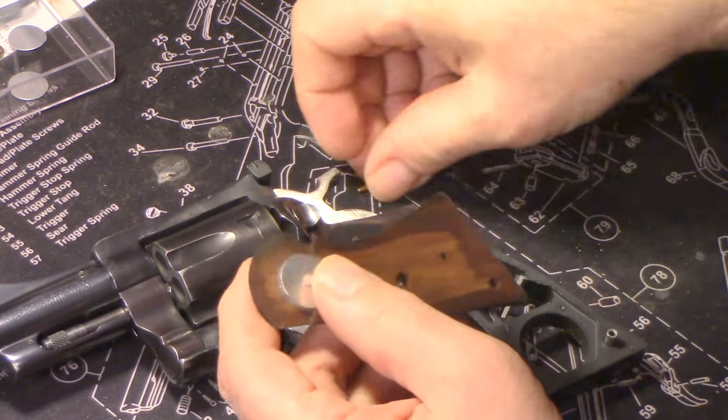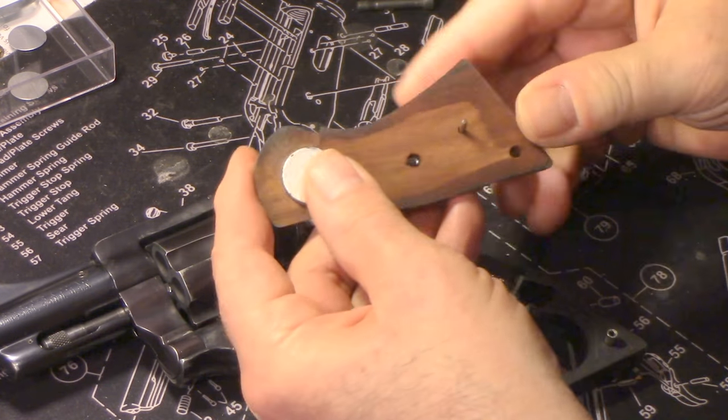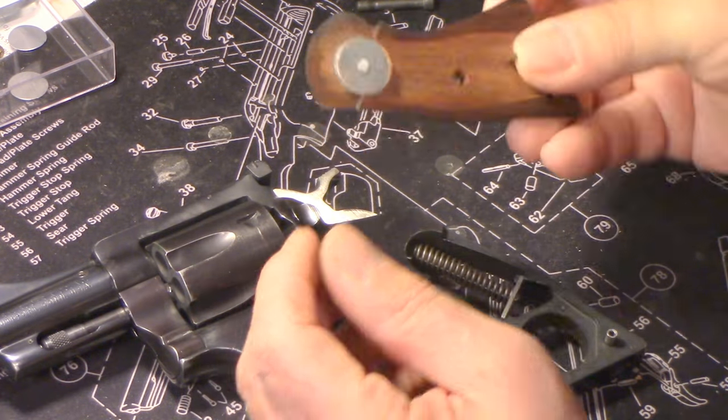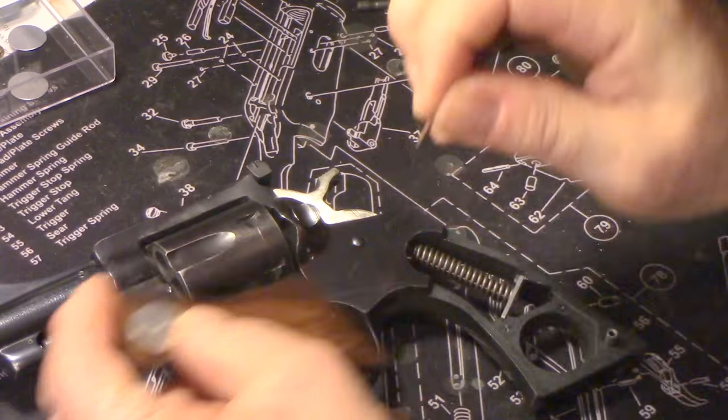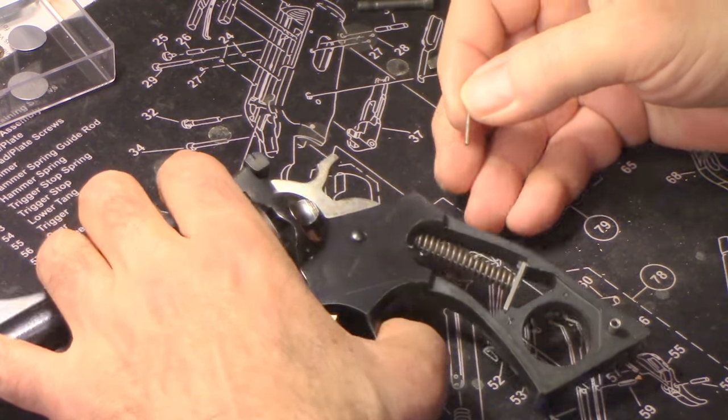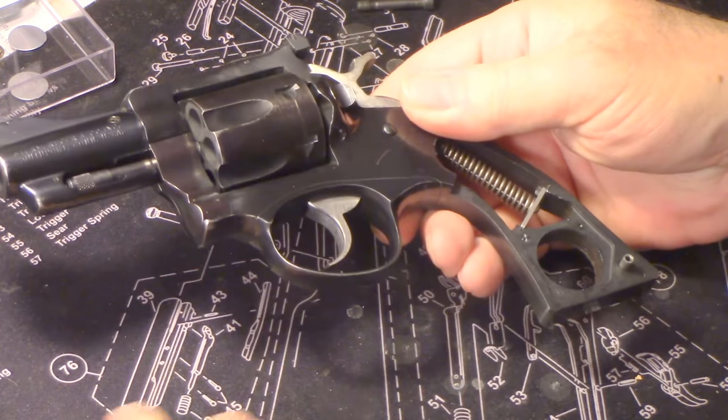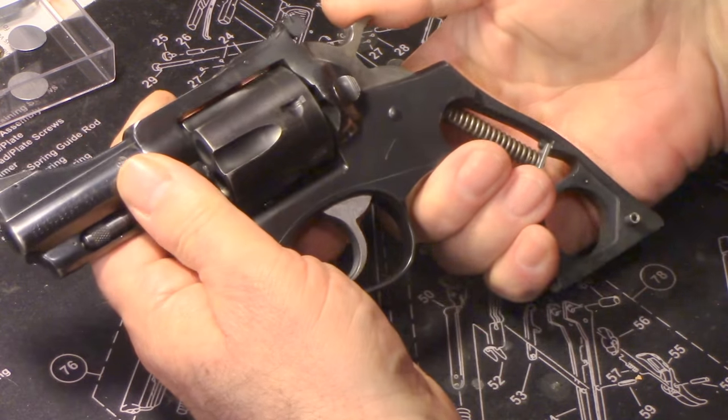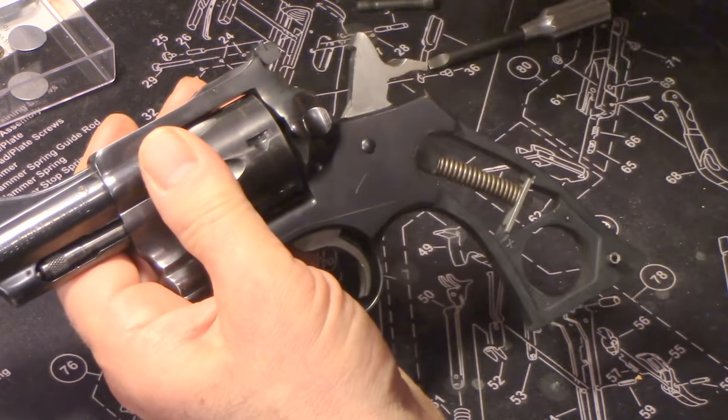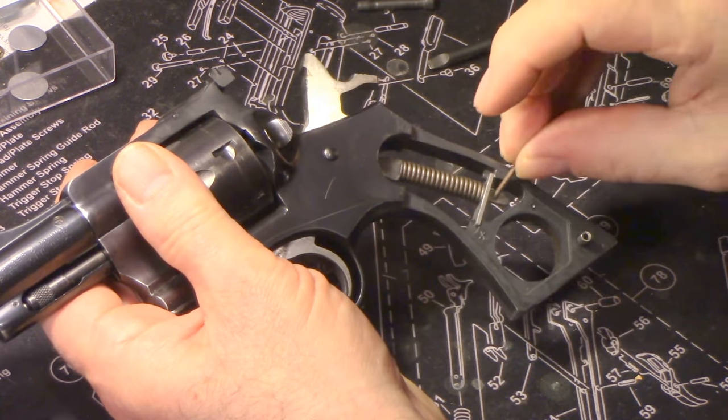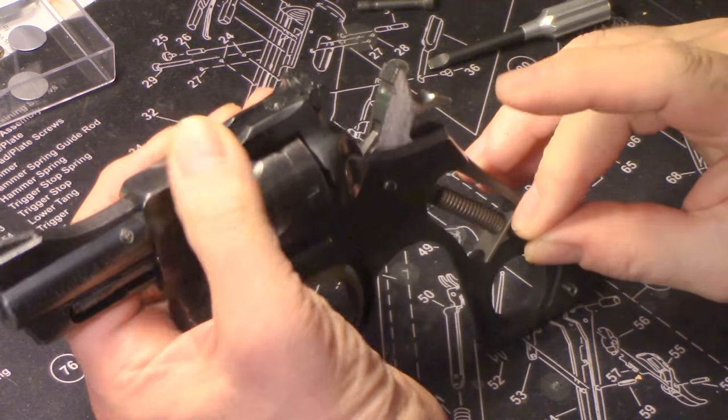Now the next thing we're going to do is make use of that pin to take the pressure off the hammer spring. You can start by first cocking back the hammer, that'll compress the spring, and then you just slide that little pin through there.